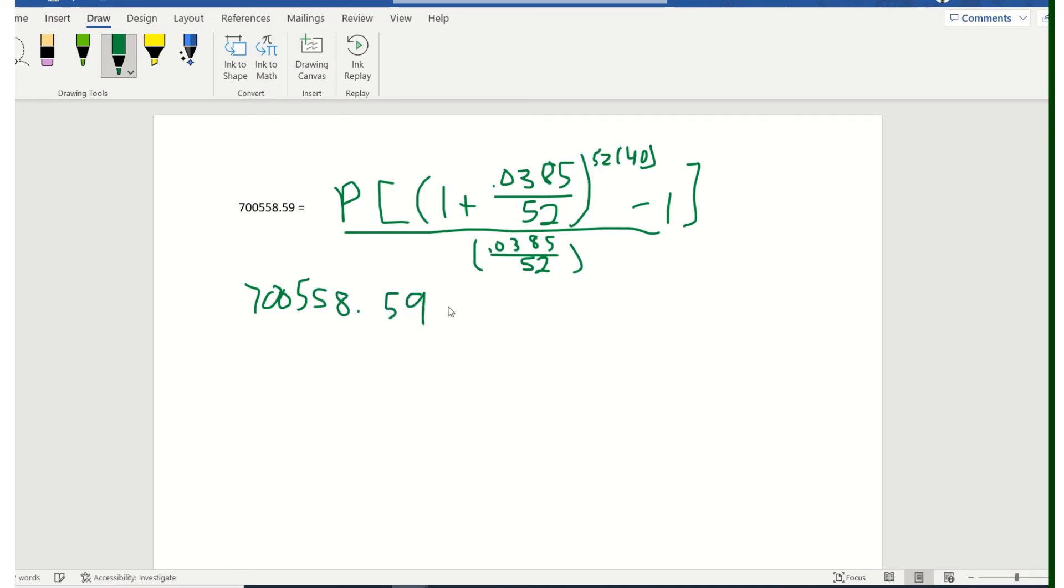So over here on the right side, I'm going to do the inside of these parentheses raised to this 52 times 40. Again, when you put that part into the calculator, be sure to put that in parentheses. So if I do that 1 plus 0.0385 divided by 52 raised to the parentheses 52 times 40, I'm going to get 4.66193307-1 minus 1.